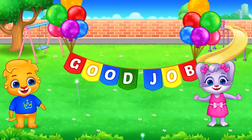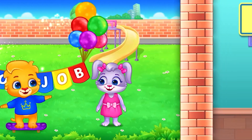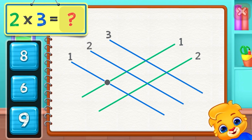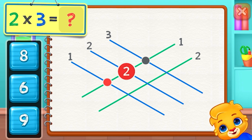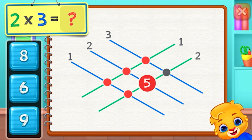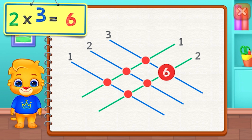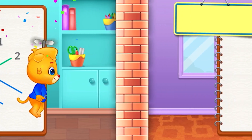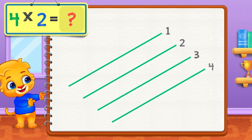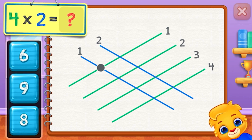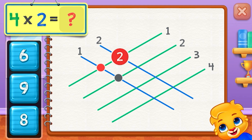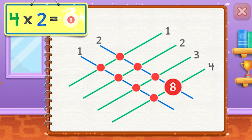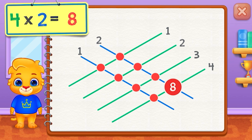Good job! 2 times 3 equals — 1, 2, 3, 4, 5, 6. 2 times 3 equals 6. 4 times 2 equals — 1, 2, 3, 4, 5, 6, 7, 8. 4 times 2 equals 8.